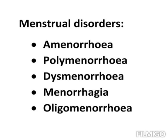Two types of dysmenorrhea: primary dysmenorrhea and secondary dysmenorrhea. Primary dysmenorrhea is pain or cramps during the menstrual period and is caused by secretion of prostaglandin in the uterus.